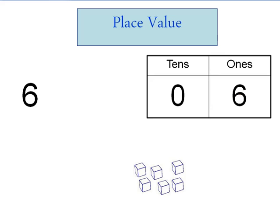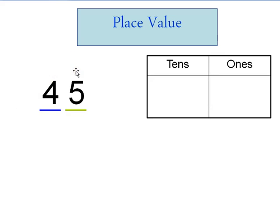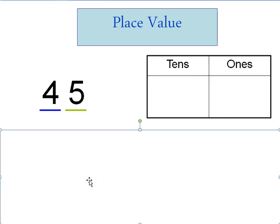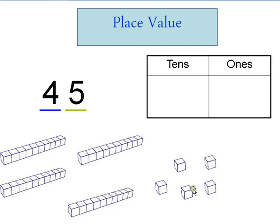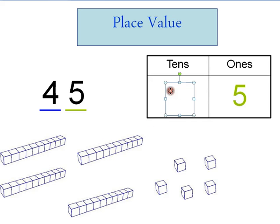Now let's look if we have two digits. See right here, we have a four digit next to a five. We always start with the number to the right-hand side — that's what's going to tell us where we are. So we start on the right-hand side: ones place. We have one, two, three, four, five ones — five in the ones place. Then the number right next to the ones is the tens. When we put ten of these ones together, we get a group of ten: one, two, three, four groups of ten — ten, twenty, thirty, forty. We have four in our tens place, so this number is forty-five.